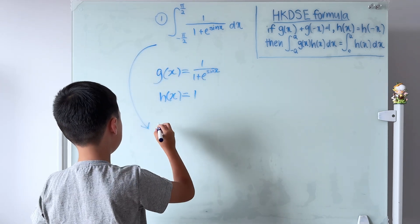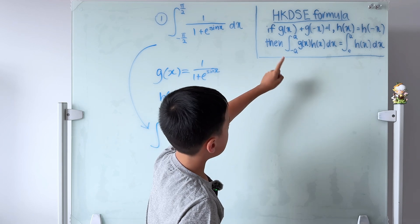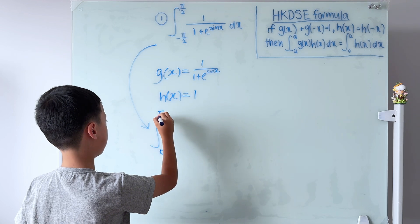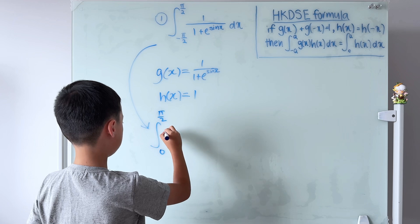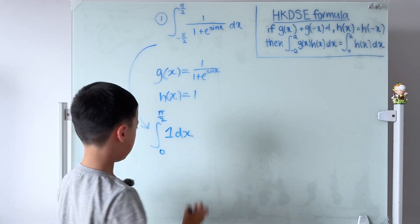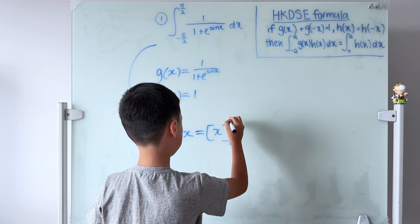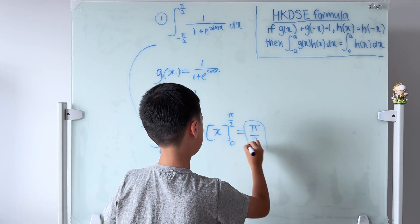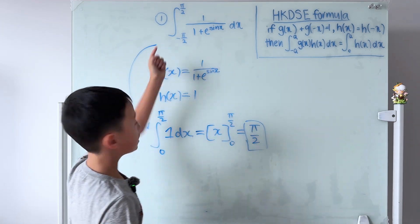Using the formula, this integral from −a to a becomes the integral from 0 to π/2 of h(x), which is just 1 dx. The integral of 1 is x, evaluated from 0 to π/2, which gives π/2.